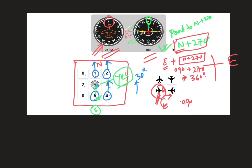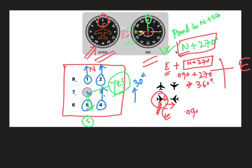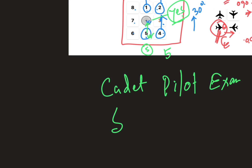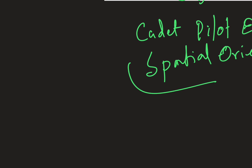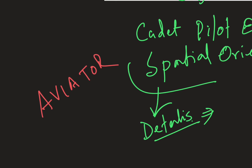So the answer is five — position three is not the answer. This is how you find the relative bearing in your cadet pilot program. The spatial orientation question will be there in your exam. If you want to learn in detail, visit our website. Thank you.